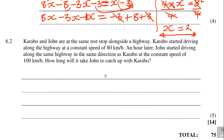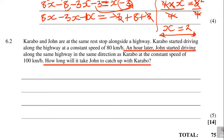Let's move on to the next one — 5 marks. It says Garabo and John are at the same rest stop alongside a highway. Garabo started driving at a constant speed of 80 kilometers per hour. An hour later, John started driving along the same highway in the same direction as Garabo at a constant speed of 100 kilometers per hour. How long will it take for John to catch up with Garabo? Let the time taken by John be x.